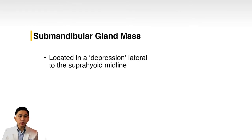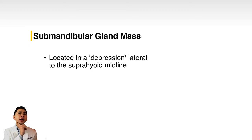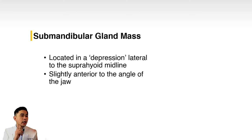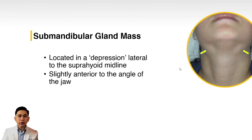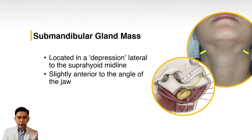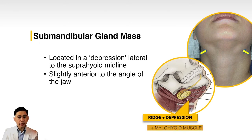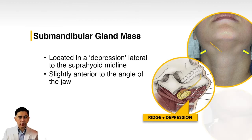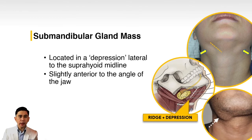Now let's go on to the submandibular gland mass. The submandibular gland is located in a depression lateral to the suprahyoid midline. If you run your fingers going to the side, just lateral to that depression is the submandibular gland — slightly anterior to the angle of the jaw. There is a ridge formed by the anterior digastric muscle. If there's a mass, it should be lateral to that ridge, which tells us the mass is indeed coming from the submandibular gland.